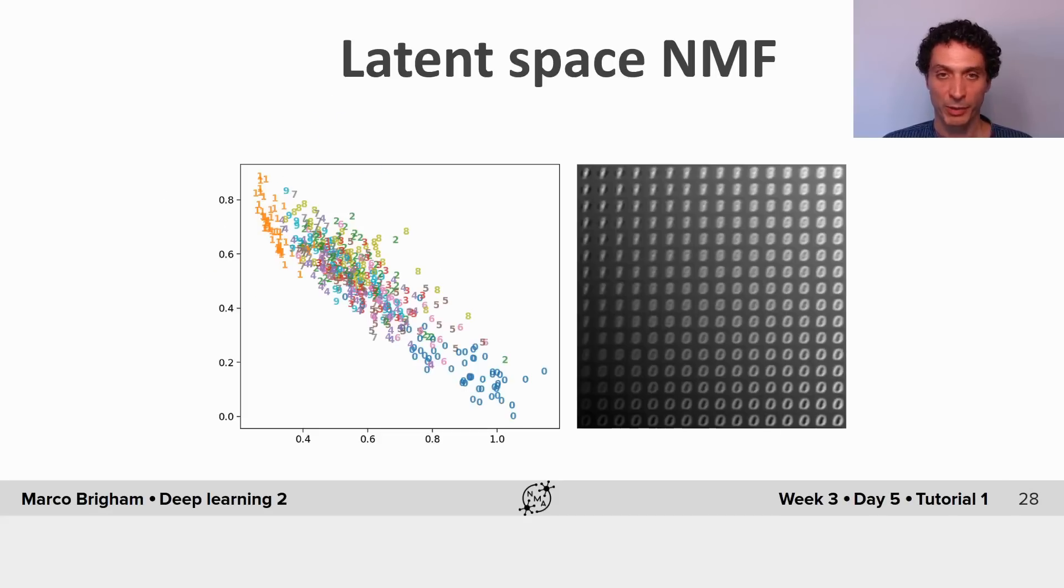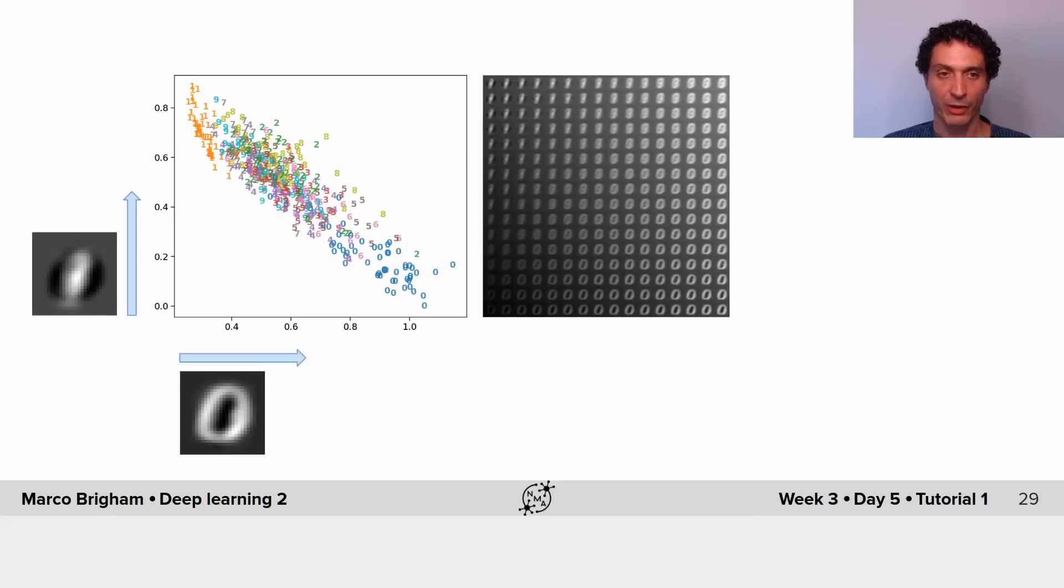Similarly, this is the representation of latent space for NMF where we also see some separation for zeros and ones but remaining digits are not very well clustered.